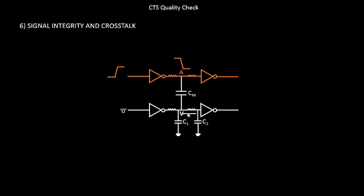So unless and until that happens, it should stay at logic 1. But what happened? This doesn't switch, but there is a nearby aggressor that tries to switch from logic 0 to logic 1. So this tab is closed, but we have a nearby tab that is open, and there is a coupling capacitance happening between this particular net and this particular net.